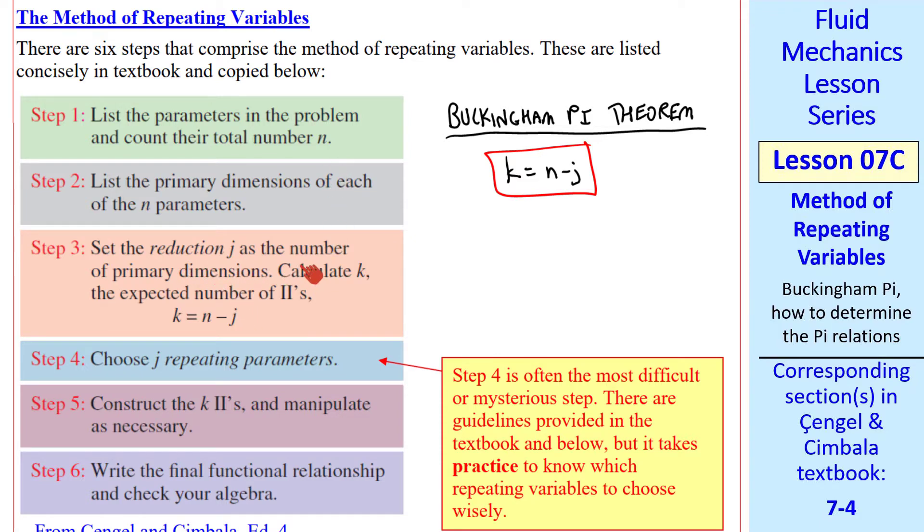As we'll see in later examples, picking j as the number of primary dimensions does not always work. If it does not work, we reduce j by 1 and try again. This may seem strange and arbitrary, but you'll see what I mean later on. Step four is to choose j repeating parameters. Once we establish j, we pick j of these initial n parameters, or variables, to be called repeating parameters. This is often the most mysterious step.